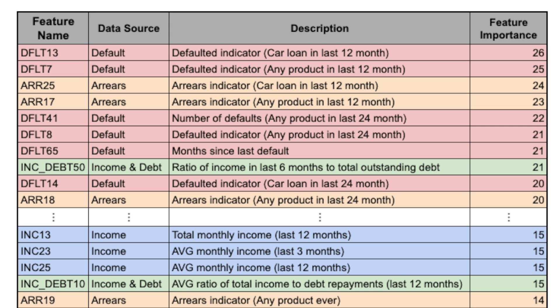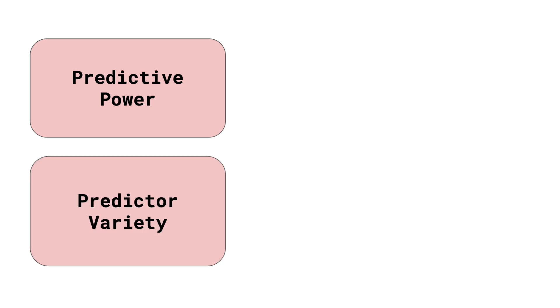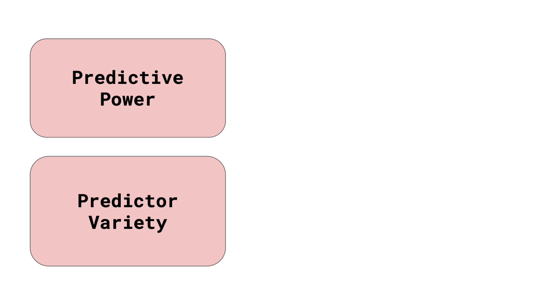So, suppose we took the 20 most predictive features as our final shortlist. You can see that we would end up with many redundant default features. This problem brings us to the second factor we should consider: predictor variety.